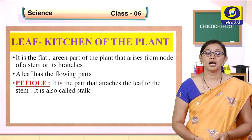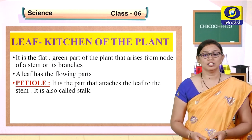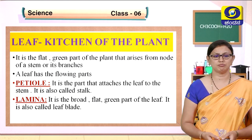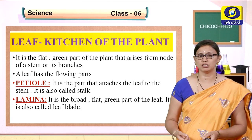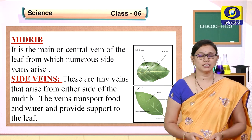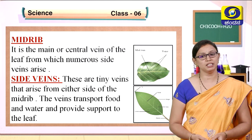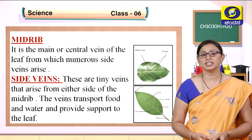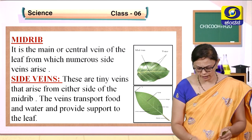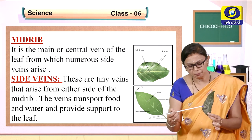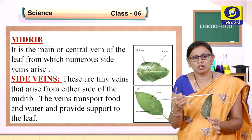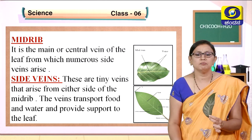Let us look into the parts of the leaves. The first part is the petiole — the stalk that attaches the leaf to the stem. The lamina is the broad, flat, green part of the leaf, also called the leaf blade. The midrib is the main or central vein of the leaf from which numerous side veins arise. The side veins transport food and water and provide support to the leaf.